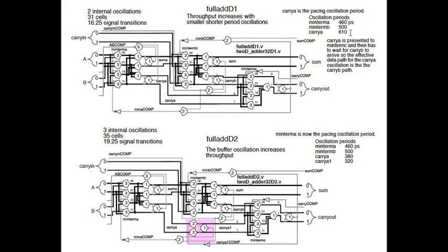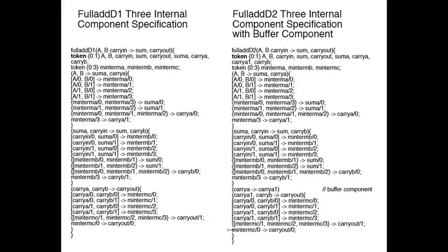We can mitigate the 610 ps pacing oscillation by breaking it into two oscillations using a buffer component. Now we have carry A at 380 ps and carry A1 at 320 ps. But midterm B is still 500 ps, so now it becomes the pacing oscillation. We've gone from 610 picoseconds to 500 picoseconds by adding the buffer in the appropriate strategic place. The specification now includes the original internal components plus the added buffer internal component.